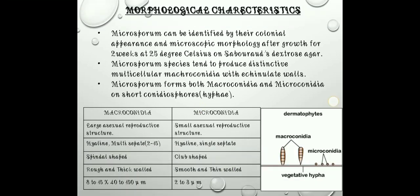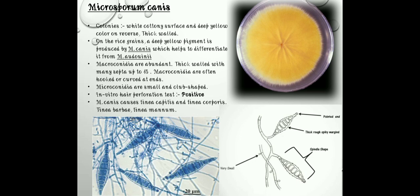The first species is Microsporum canis. The colonies are white cottony surfaced with deep yellow color on reverse, thick-walled. On rice grains, a deep yellow pigment is produced by M. canis, which helps to differentiate it from other species like Microsporum audouinii. Macroconidia are abundant and thick-walled with many septate, up to 15. Macroconidia are often hooked or curved at ends. The microconidia are small and club-shaped. The in vitro hair perforation test is conducted to check whether the organism creates perforated holes on keratinized hair — Microsporum canis gives a positive result.